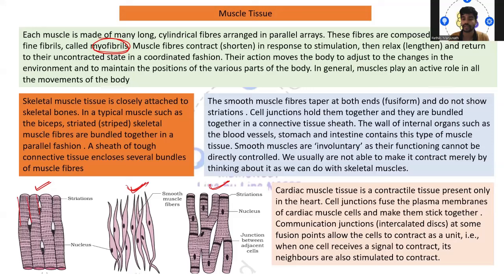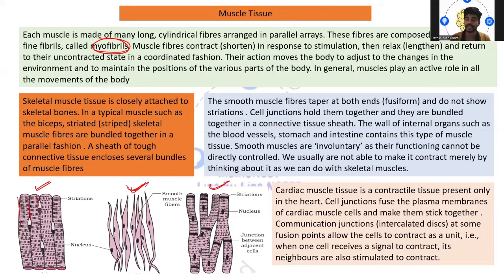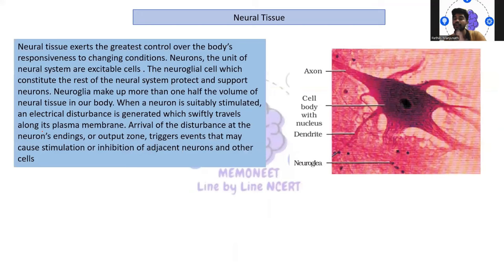The last type in muscle tissues is cardiac muscle tissue, whose presence is in the heart. Cell junctions fuse the plasma membrane of cardiac muscle cells and make them stick together. The communicational junction at some fusion points allows the cells to contract as a unit — like the heart's lub-dub rhythm. When one cell receives a signal for contraction, it will contract; once the signal is removed, it will relax. Simultaneous continuous contraction can be seen.